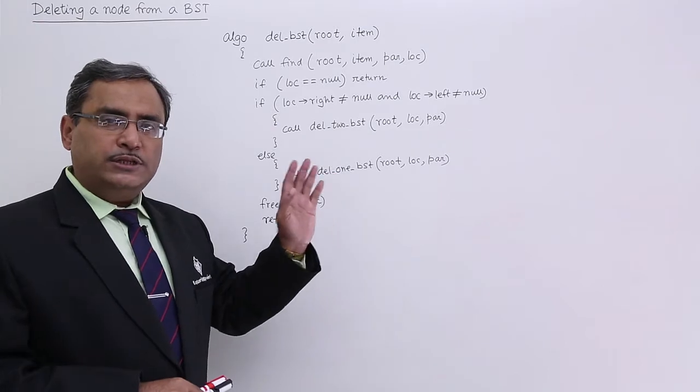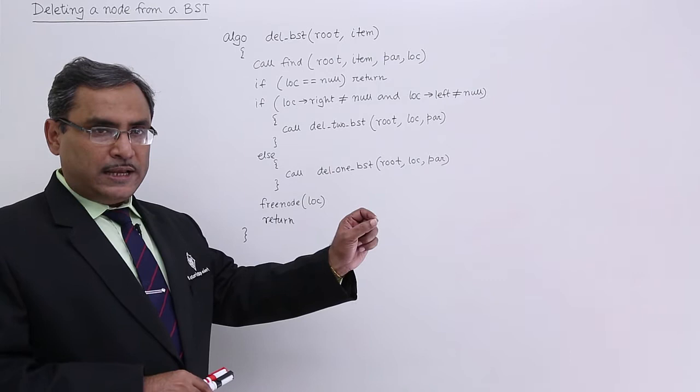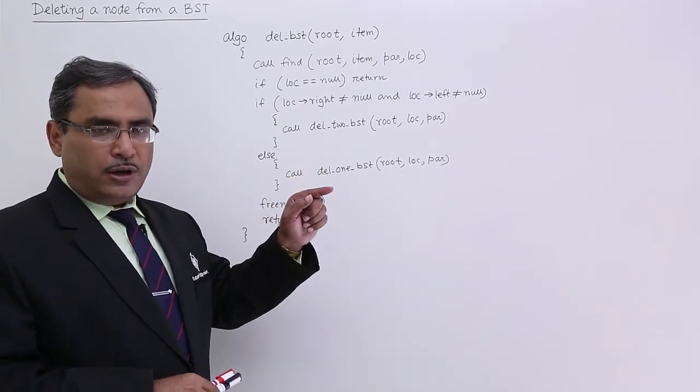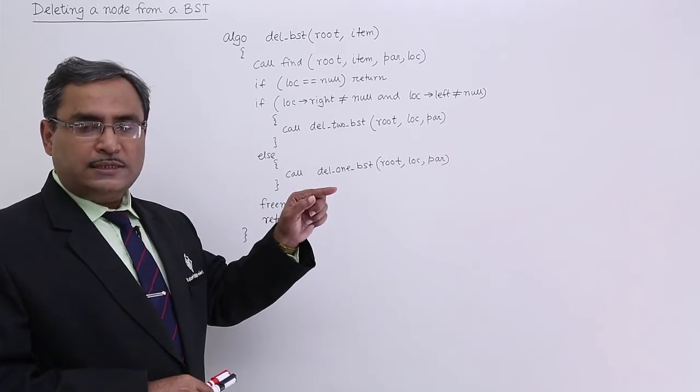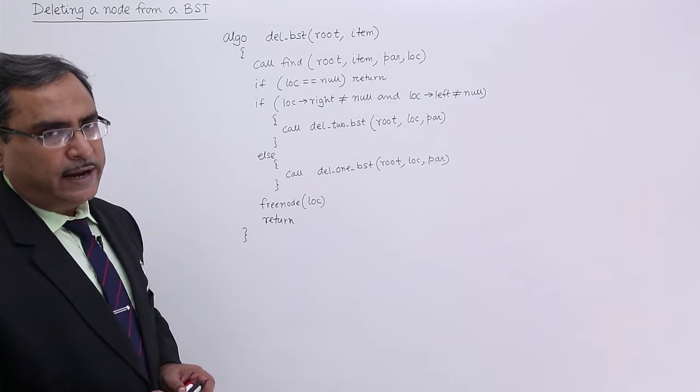Del 2 BST will take all the charges how to delete it, how to put the in order successor to the deleted node place and how to establish 3 links from the parent to lock and then from the parent to the successor then successor to the pre-existing left child and successor to the pre-existing right child.